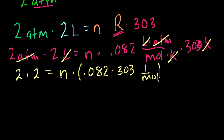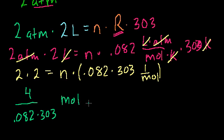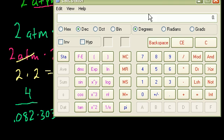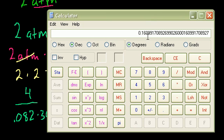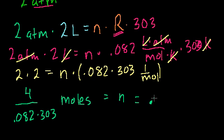And so we have 2 times 2 equals n times 0.082 times 303, and we have just a per mole. To solve for n, we divide both sides by all of this stuff. So we get 4 divided by 0.082 divided by 303, and when you divide by a per mole, that's the same as multiplying by a mole. So we get the calculator out: 4 divided by 0.082 divided by 303 equals 0.16 moles of H2.